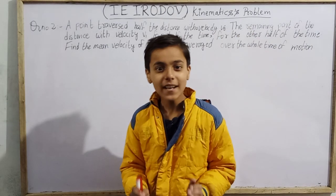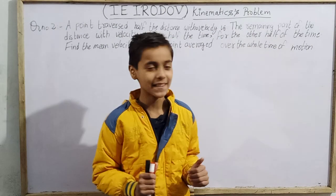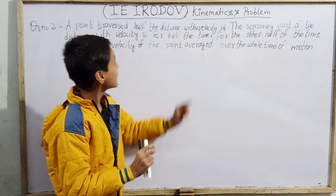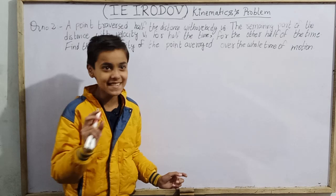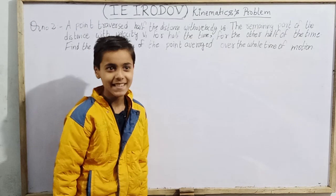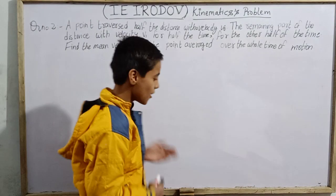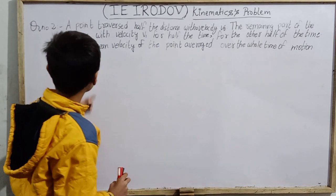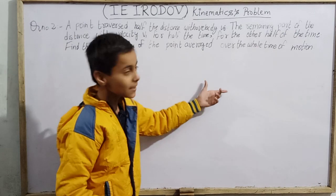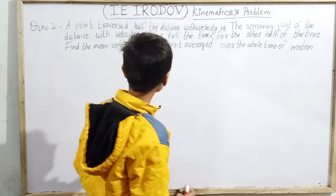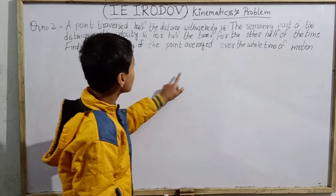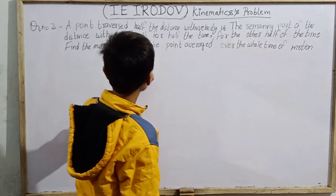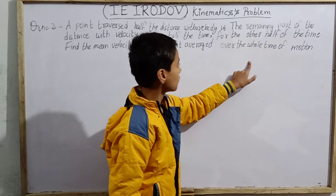Hello everyone and welcome back to SK Wonder Kids. Today we will do some problems in general physics by I.E. Irodov. Here is the second question of the exercise — a really fantastic question. A point traversed half the distance with a velocity V0, the remaining part of the distance with velocity V1 for half the time, and the other half of the time with V2. Find the mean velocity of the point averaged over the whole time of motion.